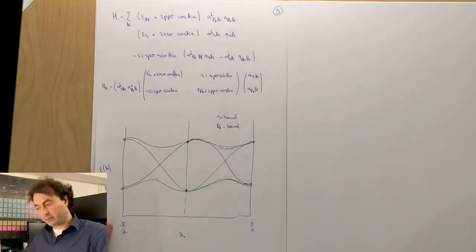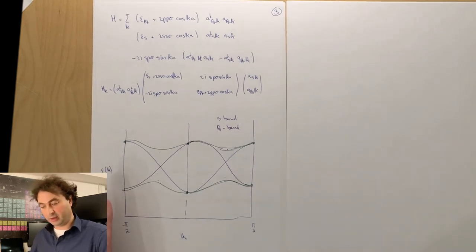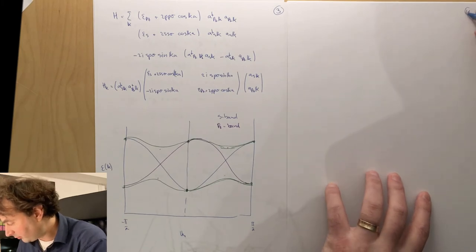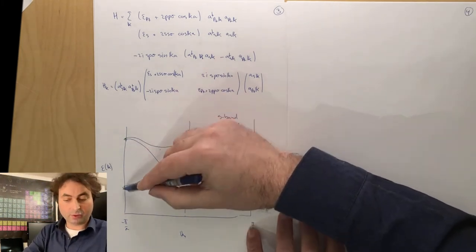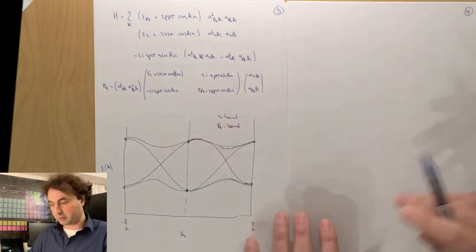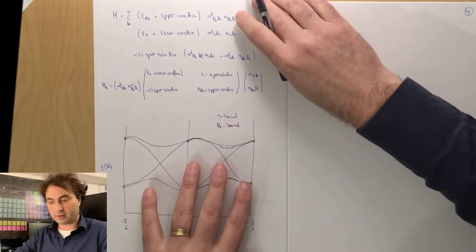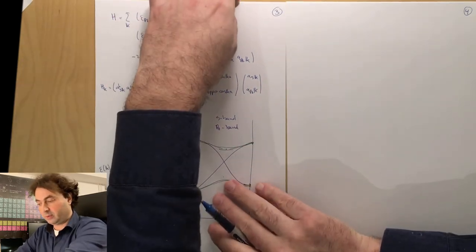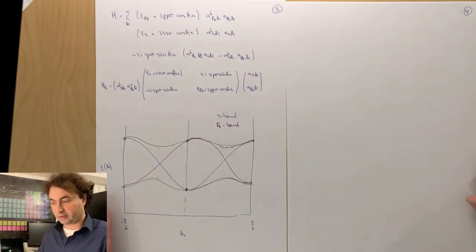Now how can we use this to make free electron bands? By the way, it is this not mixing between even and odd orbitals that will give rise to topology effects that we can discuss later on in this lecture.